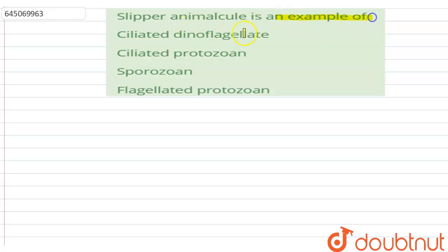Slipper animalcule is an example of? The options are: ciliated dinoflagellate, ciliated protozoan, sporozoan, and flagellated protozoan. The correct